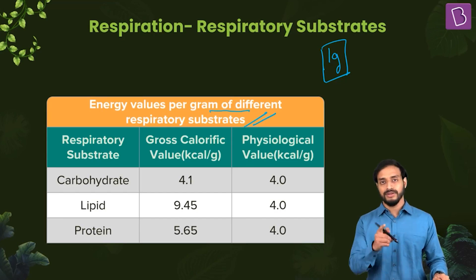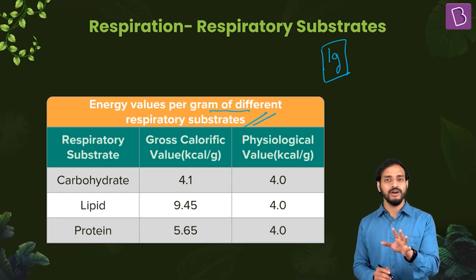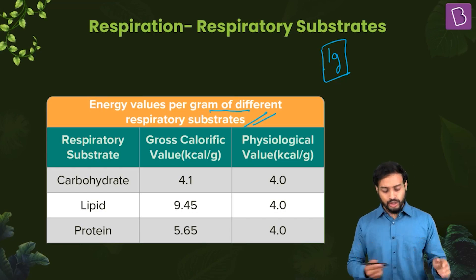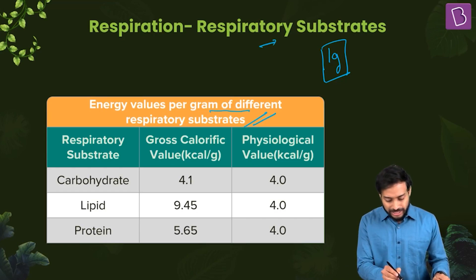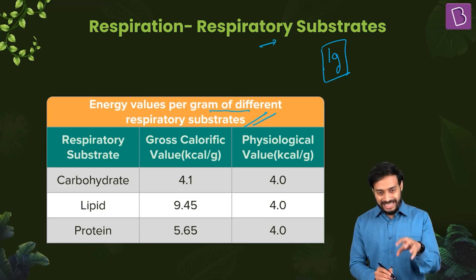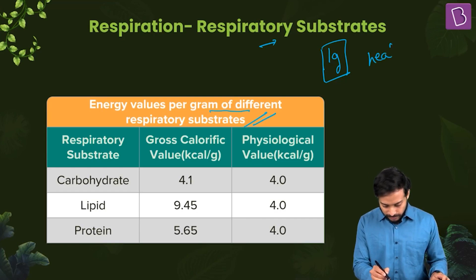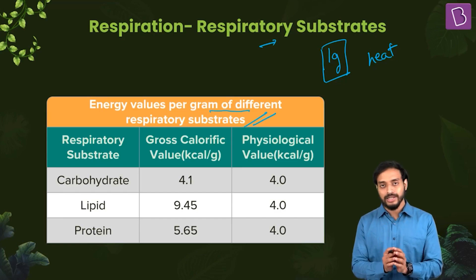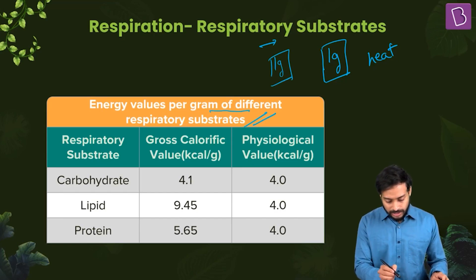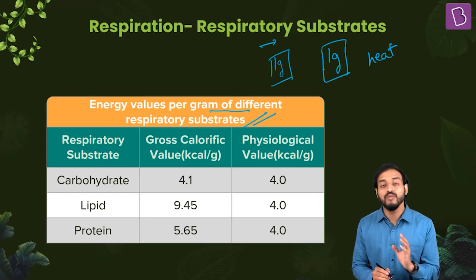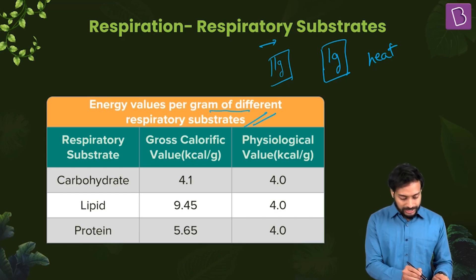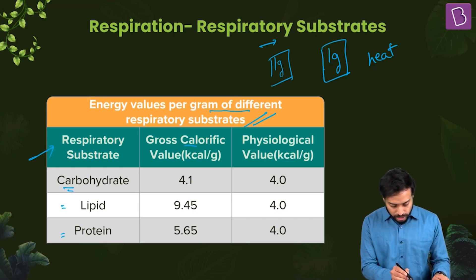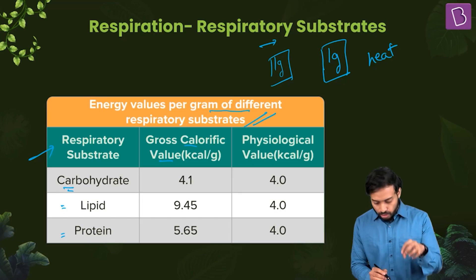The bomb calorimeter is a closed metal chamber used to measure heat. It measures the heat of combustion of a particular substrate — when one gram of that substrate undergoes complete oxidation, how much heat is produced. The respiratory substrates measured this way are carbohydrates, lipids, and proteins.